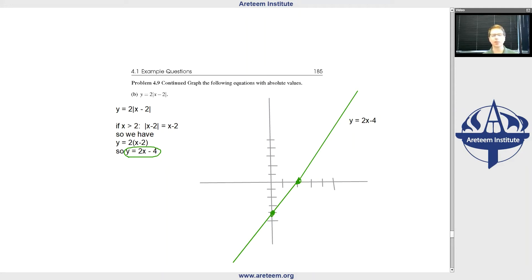Then absolute value of x minus 2 - this is negative. So this is negative of x minus 2. Remember, when it's negative, we flip the sign. So negative x plus 2. Both of them have to turn into negative values. So we have y equals 2 times negative x plus 2. So now we have y equals negative 2x plus 4.